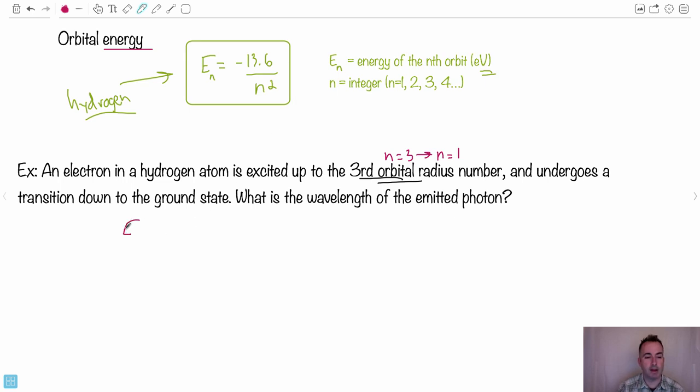Well, what we can do is we can find out what's E3, in other words what's the energy of the third orbit. Let's say it's minus 13.6 over 3 squared. Well, that's minus 13.6 over 9. So that gives me a negative 1.51 electron volts. Let's do E1. That's negative 13.6 divided by 1 squared. And 1 squared is just 1, so that means it gives me a value of negative 13.6 eV.